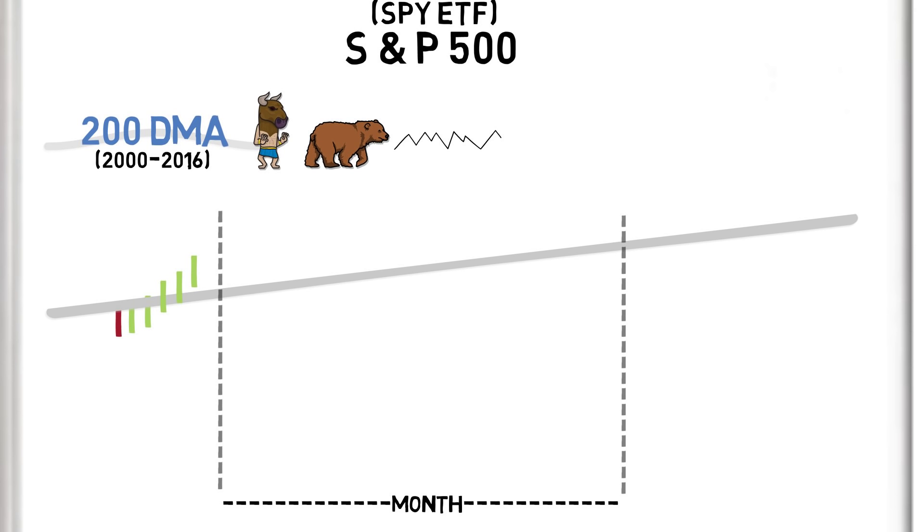To enter a long position, we need to see price cross above the 200 day moving average, which we see here, although we need to wait until the end of the month to confirm and place a trade. The end of the month approaches, and we confirm our long position and enter a trade. We then sit and wait out the whole month to determine our next trade decision.